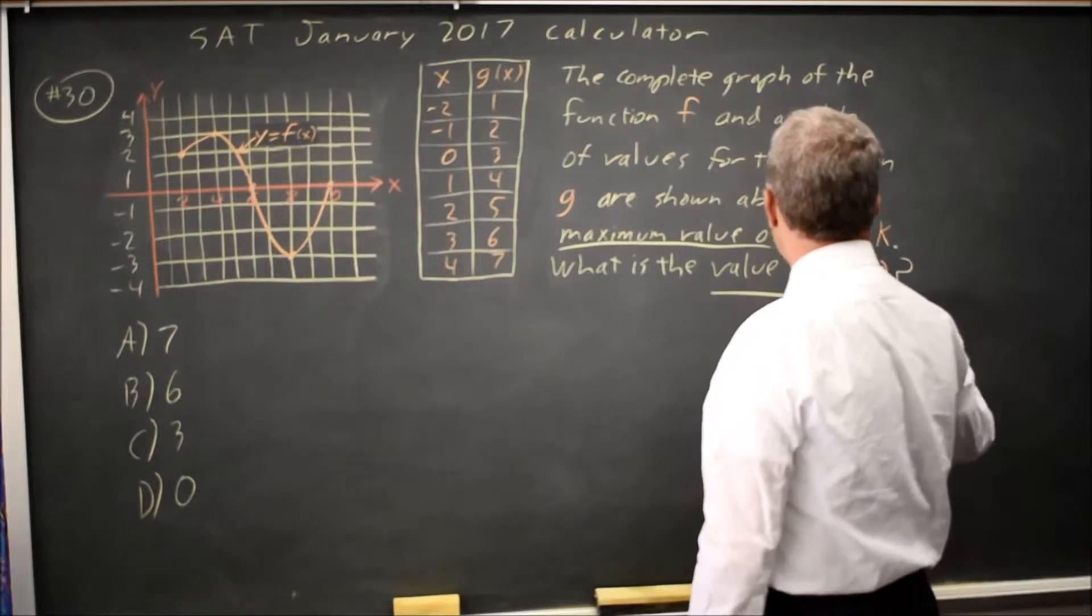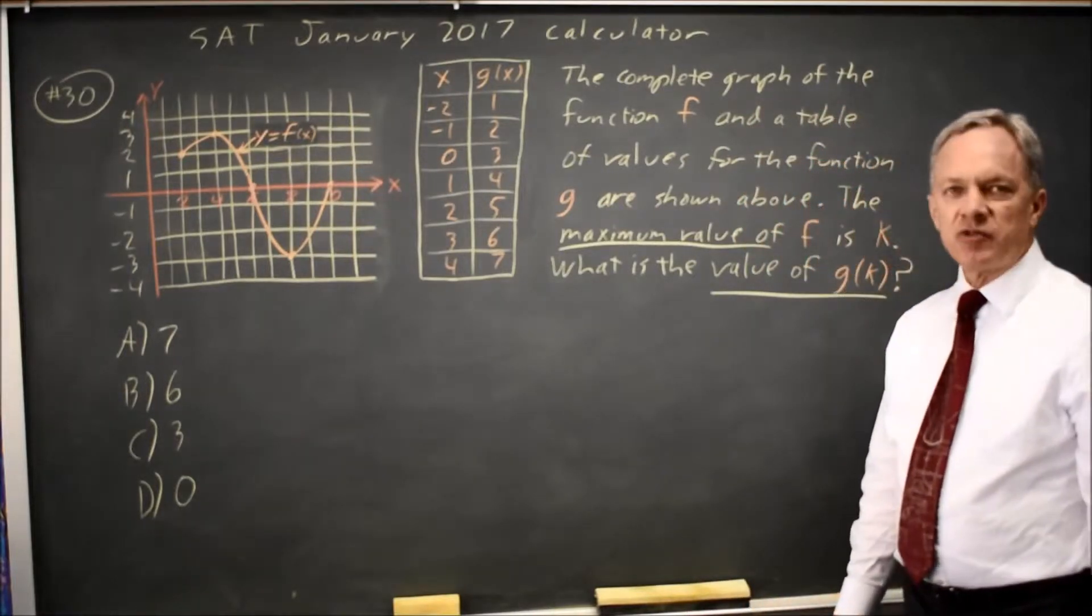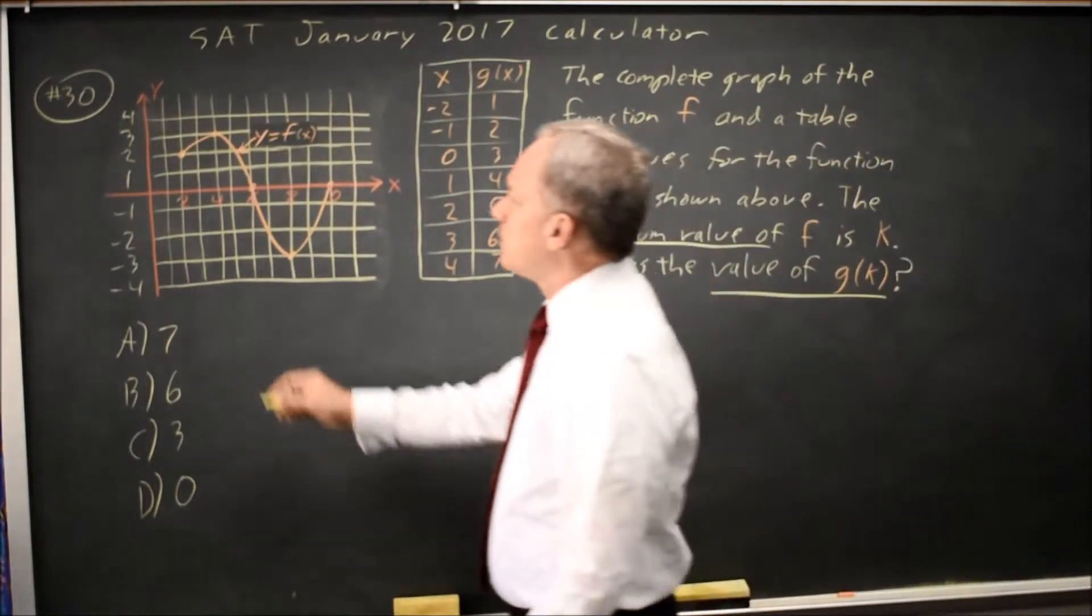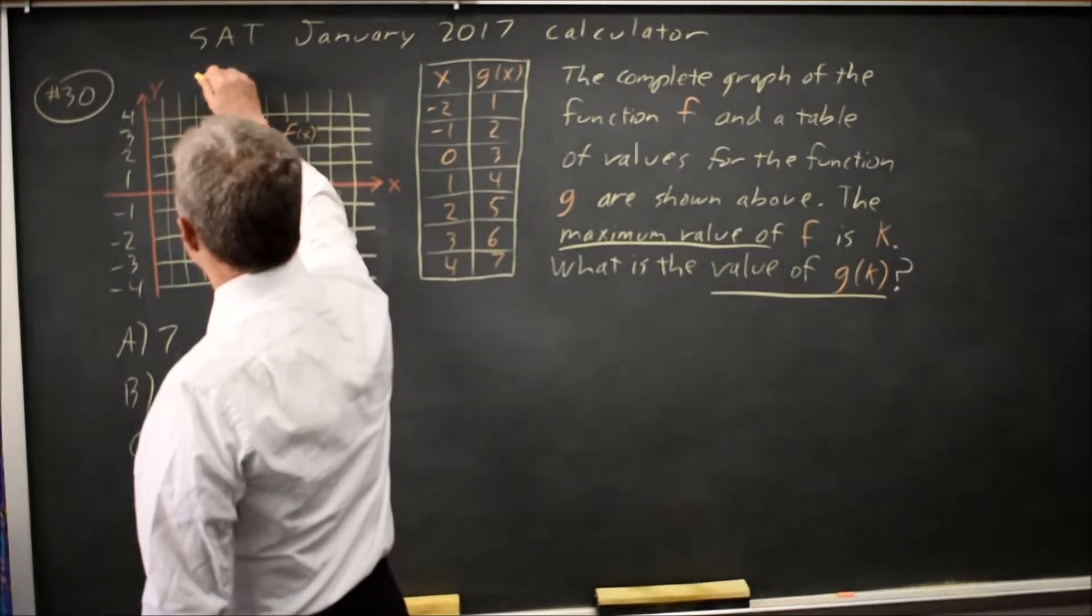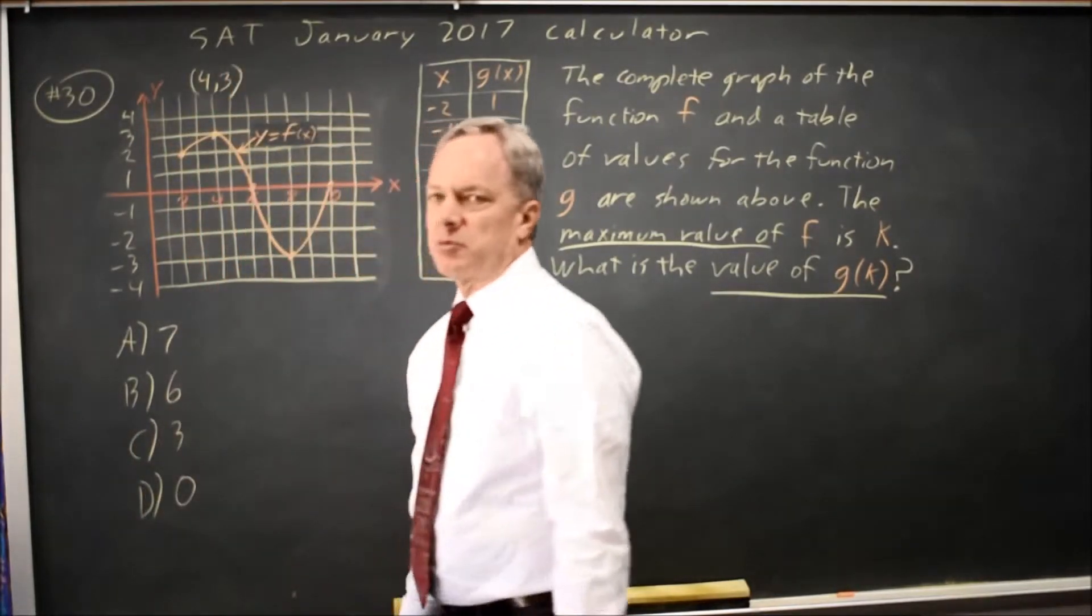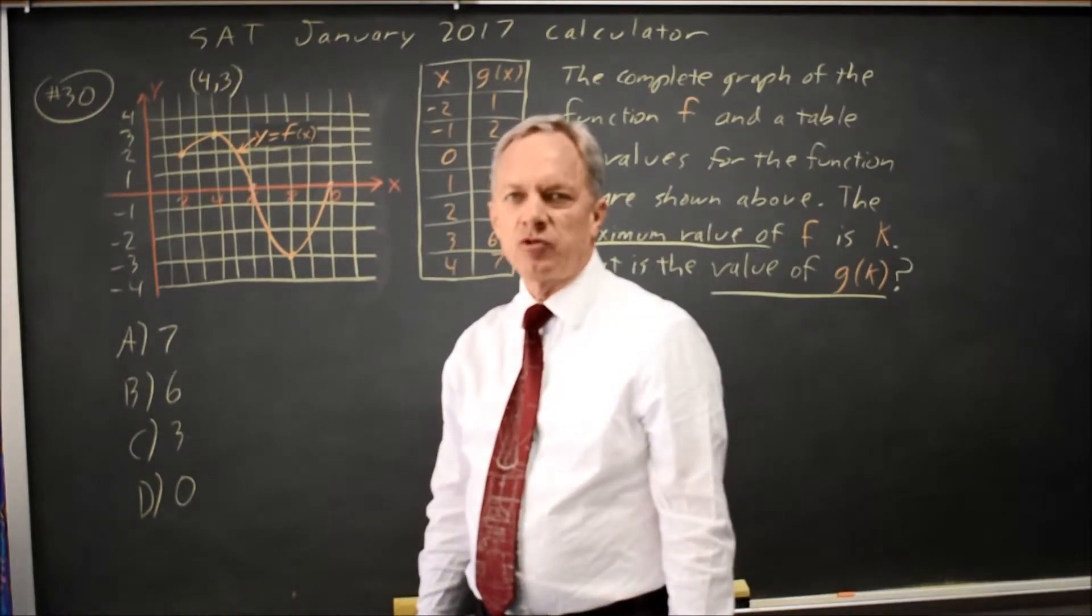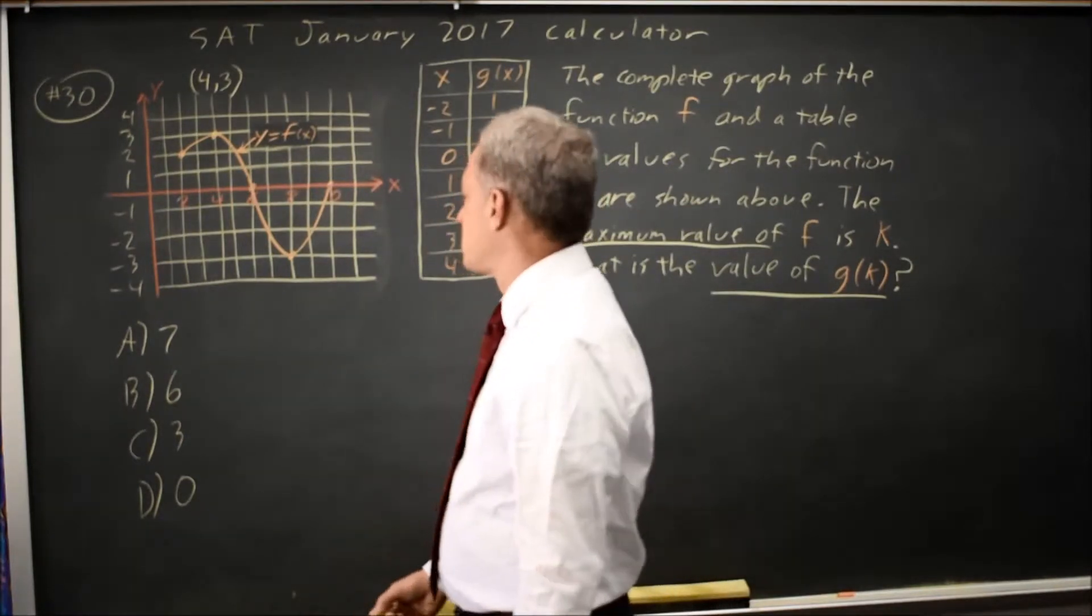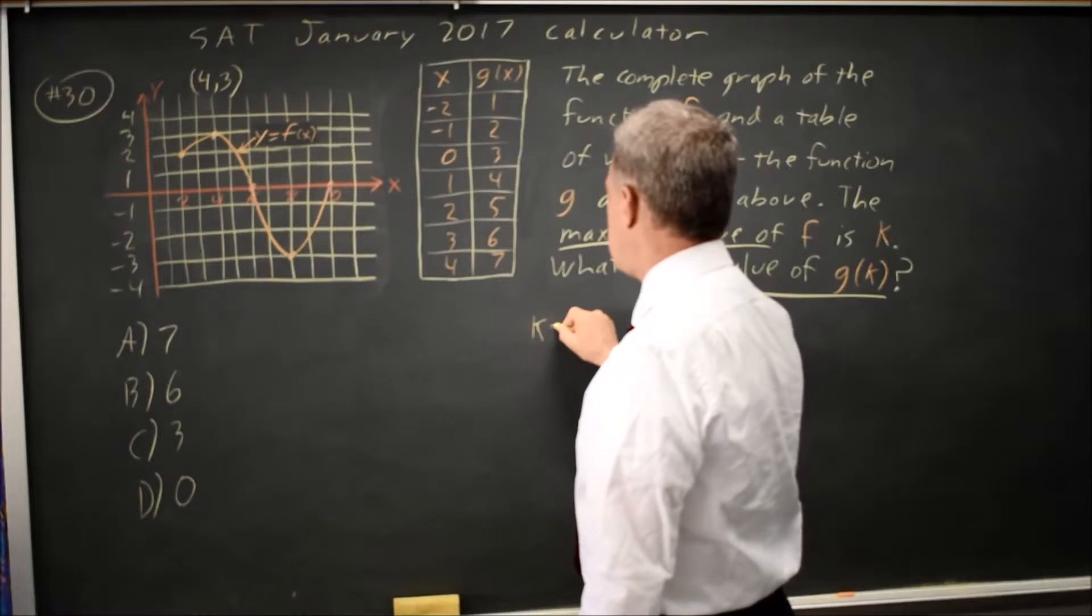What is the value of g of k? The maximum value of f is this point, which is the point x equals 4, y equals 3. The maximum occurs at x equals 4, but the maximum value is 3. k equals 3.